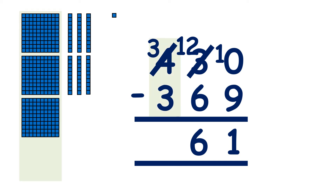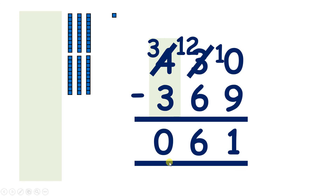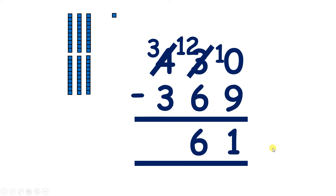Now on to hundreds — we have 3 hundreds, so if we subtract 3 hundreds we're left with 0. But rather than writing 0, 6, 1 — because we don't have anything more to subtract — we can just write 61 for our answer.